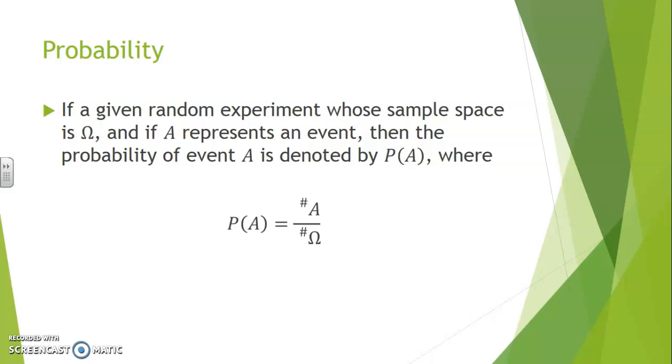It is calculated by finding the ratio of the cardinality of A over the cardinality of omega.